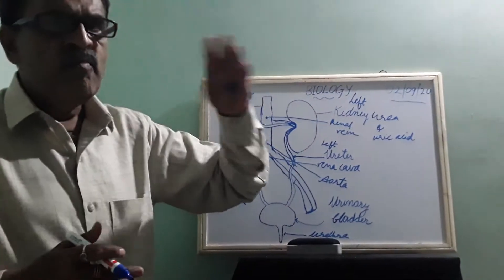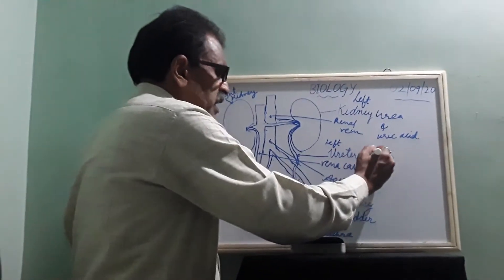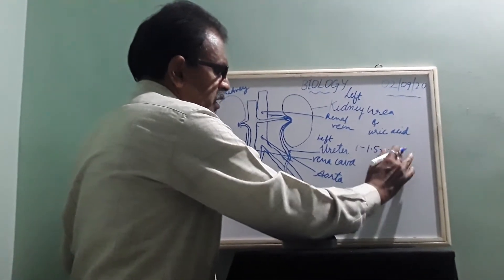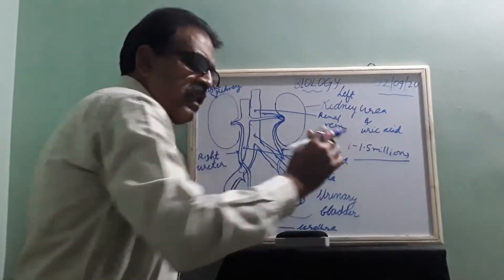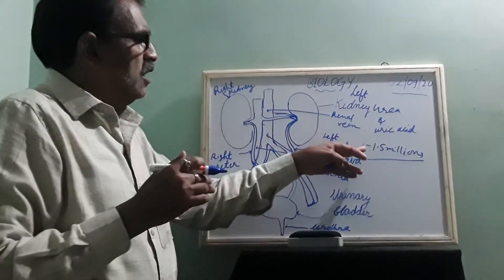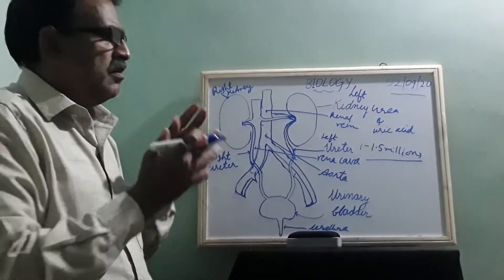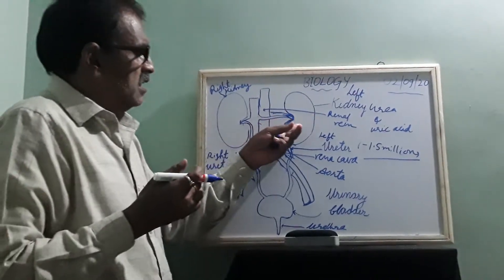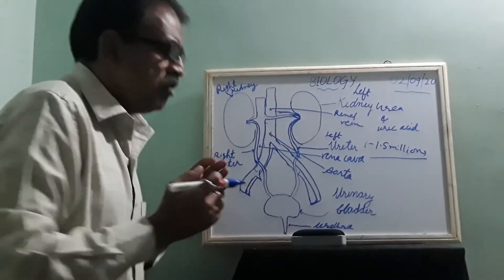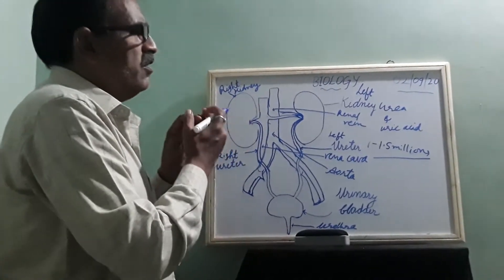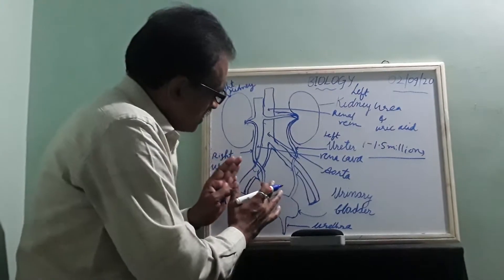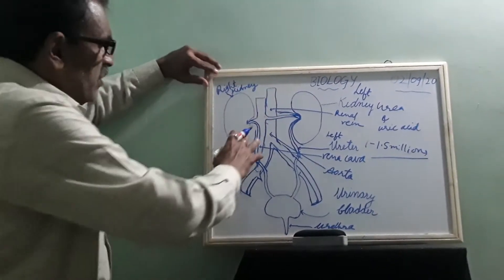Inside the kidney there are nearly one to one-point-five million nephrons. Just as lungs are filtering organs, inside the kidney there are one-point-five million wire-like structures called nephrons — they are filtering units where reabsorption takes place, and lastly they throw out waste liquid in the form of urine.